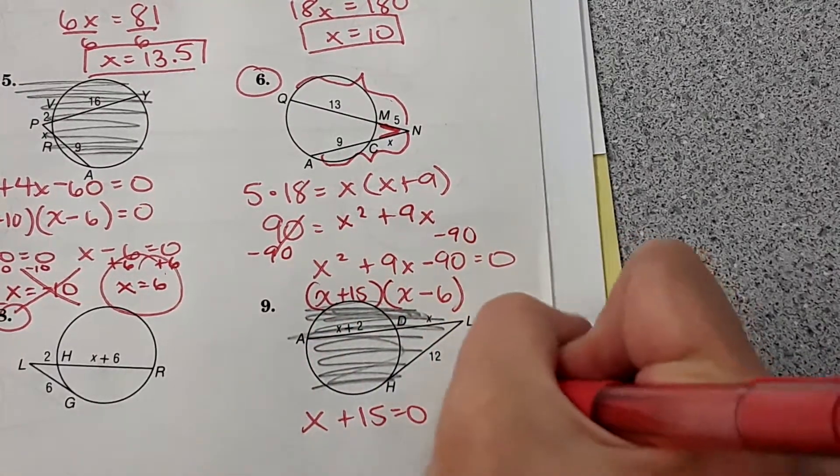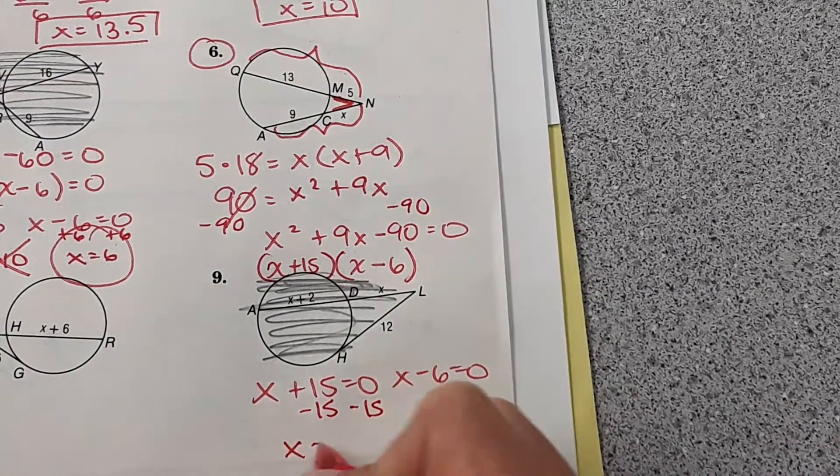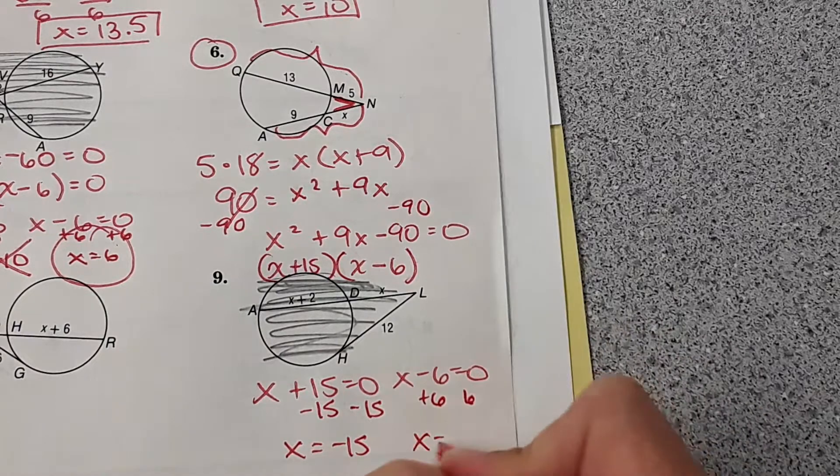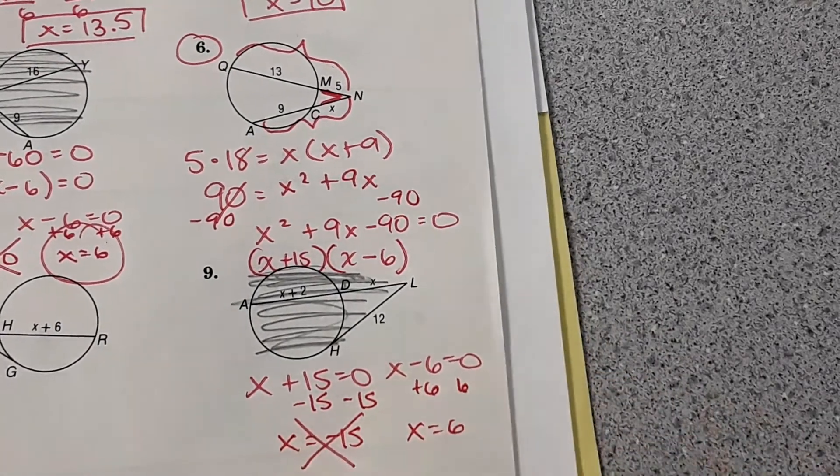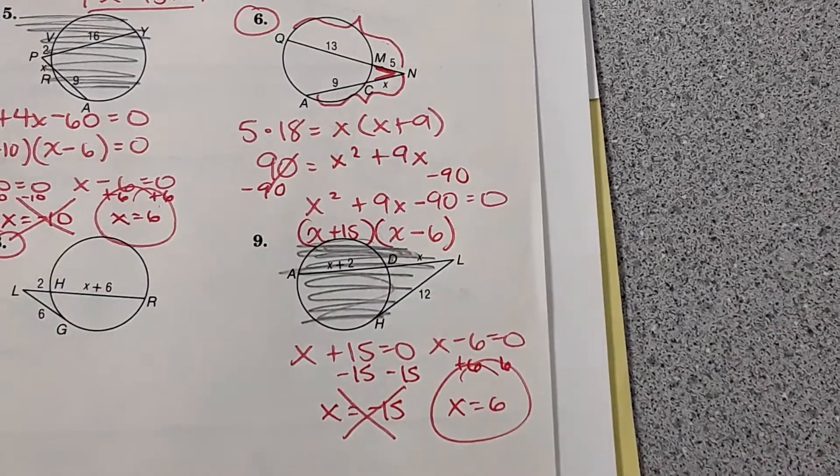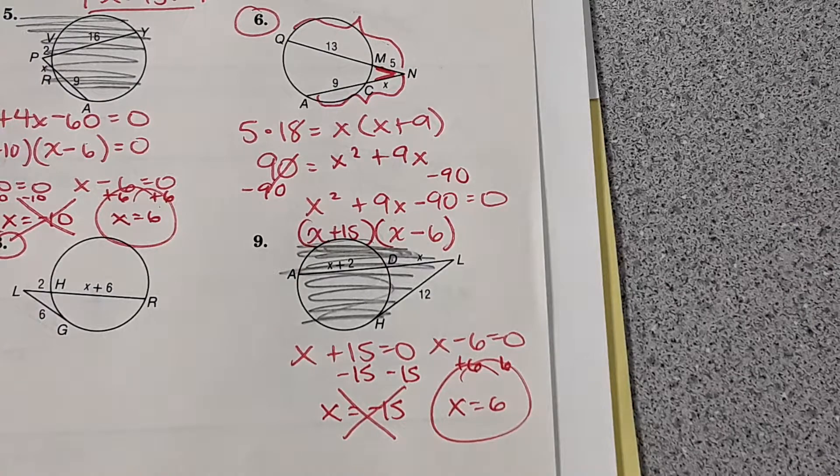And then we'll set both of these equal to 0. So 6 again? It is 6 again. x equals negative 15 and x equals 6. Negative doesn't work in this situation, so it's just x equals 6. Will it ever be negative? Depending on the situation. Like below sea level, you can have negative, but distance, you can't have negative. You can't travel a negative distance.